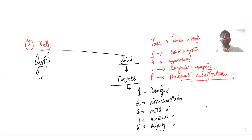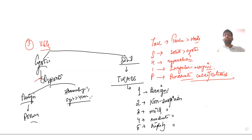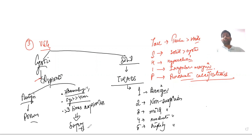If a cystic lesion is found on ultrasound, the approach differs. We aspirate the cyst content and perform cytology. If cytology is benign, the patient is followed up. Indications for surgery with a cystic lesion include: hemorrhagic or malignant aspirate, cyst size greater than 4 cm, or cyst persistence after three previous aspirations. These are the indications for surgery in a thyroid cyst.